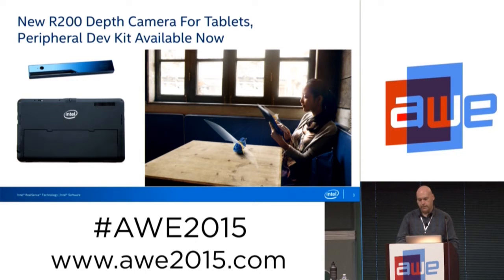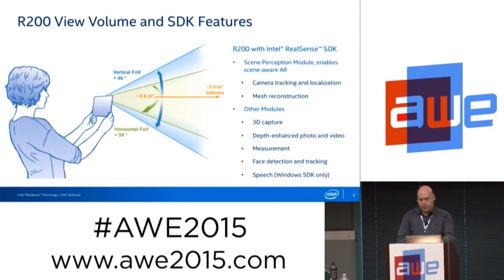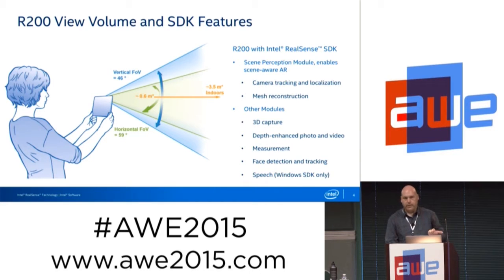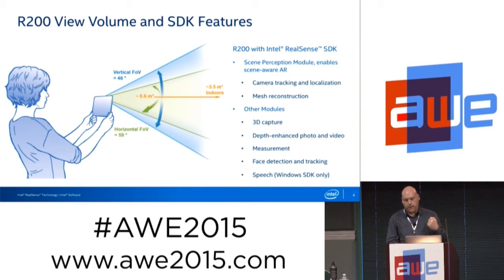The photo here shows the kind of world-facing configuration. More specifically, it sees from about half a meter out to about three and a half meters, depending on the modes and the environment. With the RealSense SDK, there are a number of modules to implement different features. The main one relevant for AR is the scene perception module, which enables scene-aware augmented reality, implements camera tracking and relocalization, as well as mesh reconstruction.